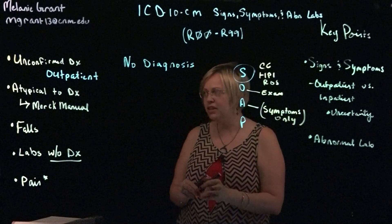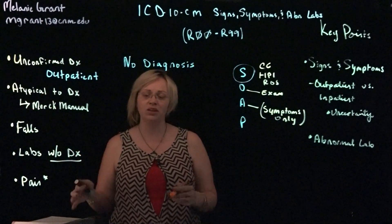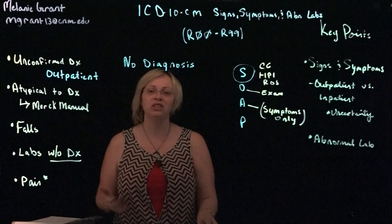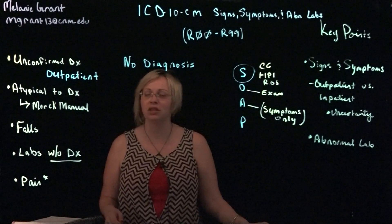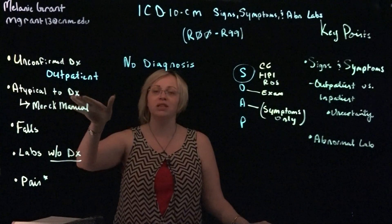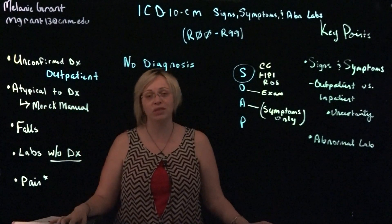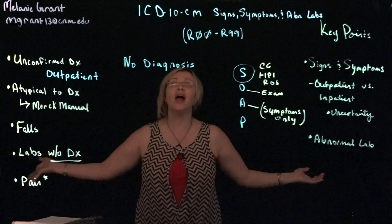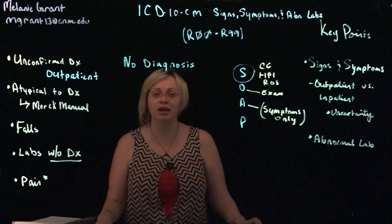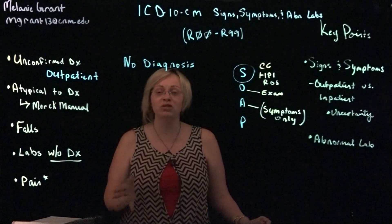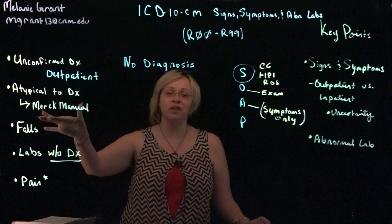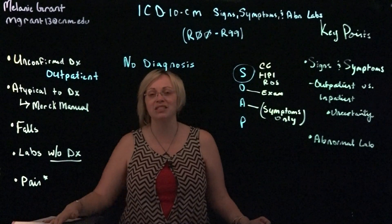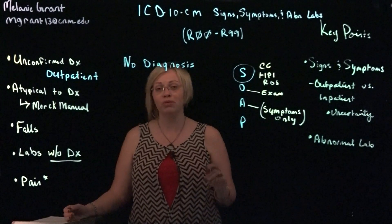Now your guidelines also talk about how if a diagnosis is established and a sign and symptom is included, we would not code the additional signs and symptoms that are part of that diagnosis. You would only code separately if it's atypical to the diagnosis — meaning separate from what's common with that diagnosis. You may be thinking, 'How am I going to know every sign and symptom for every diagnosis?' But rest assured, there are resources out there for coders. My absolute favorite is the Merck Manual. If you go into your HIT resources associated with this class, you'll find a link to Merck Manual for Professionals, or you can just Google it.